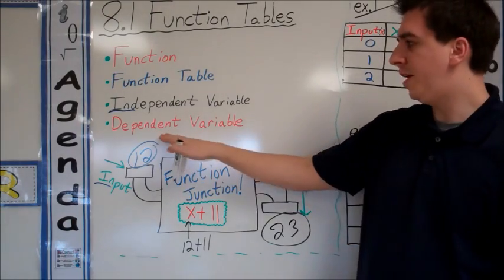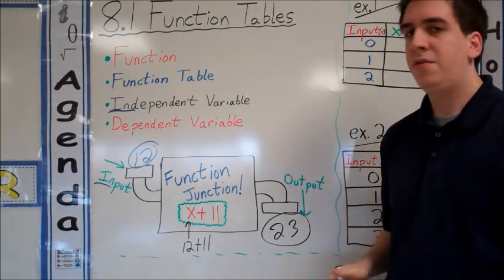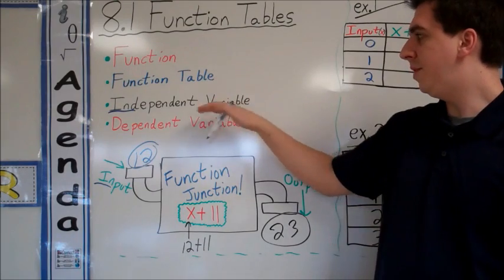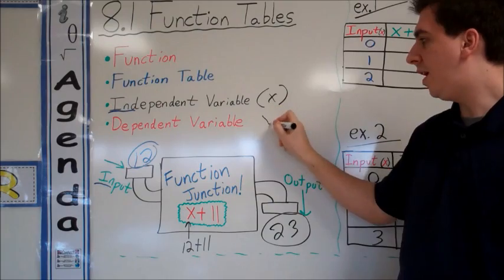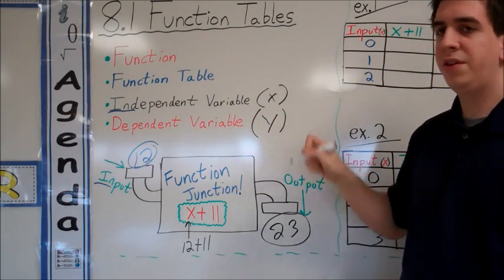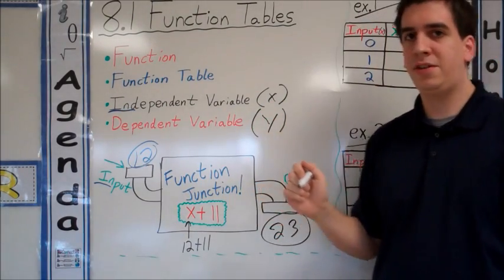Your output is also called your dependent variable. When you graph, your independent variable is going to be x, and your dependent variable is going to be y. These are really important notes to take, so we should be writing something like this down.